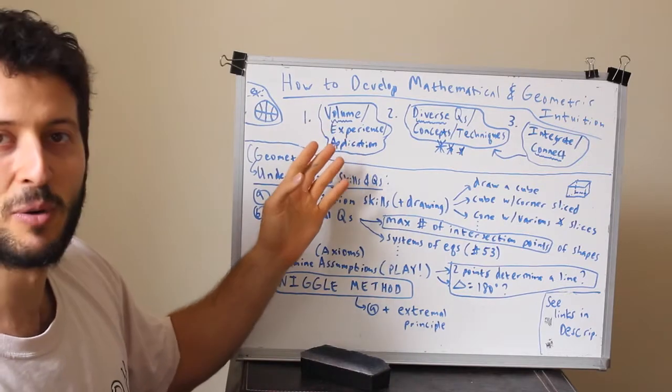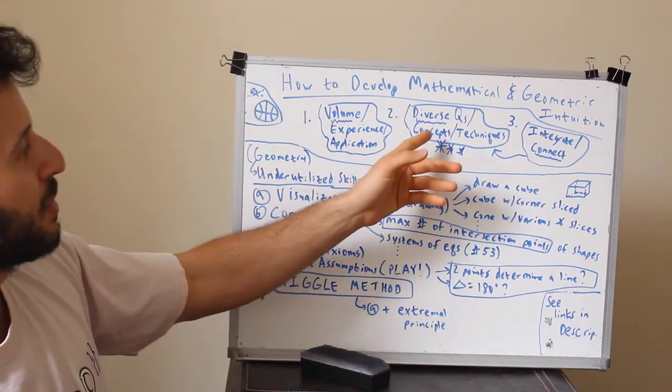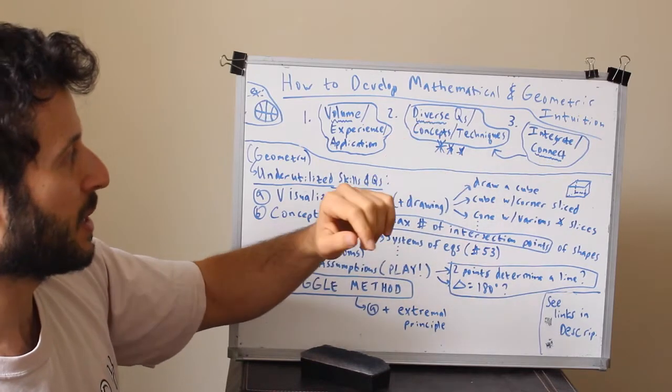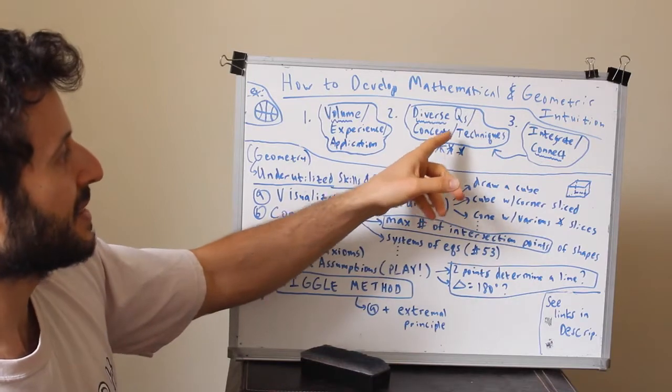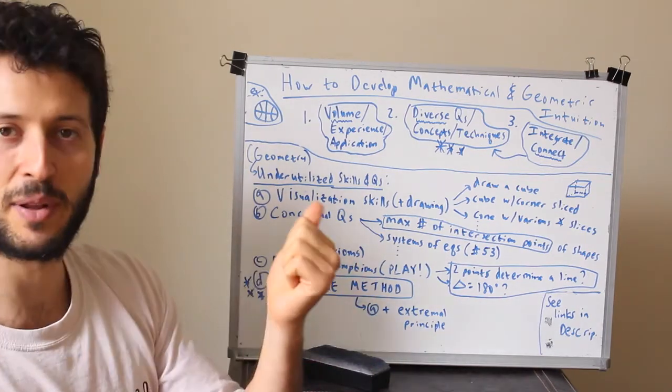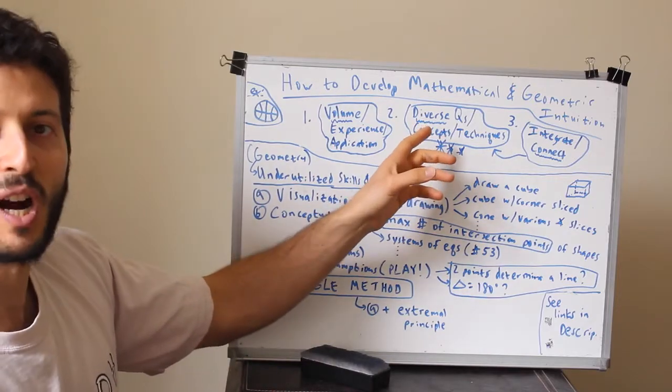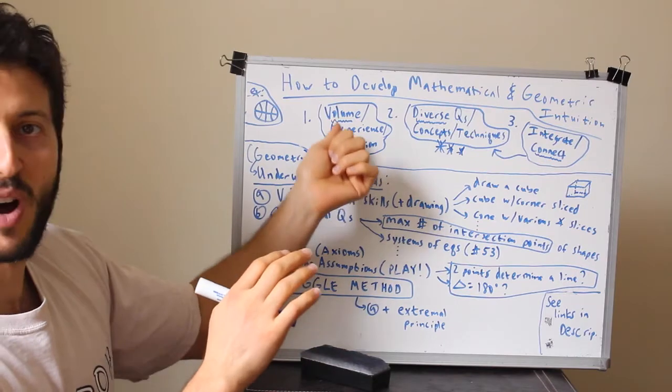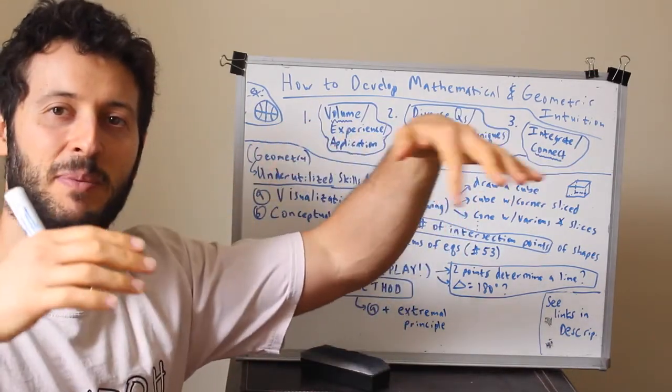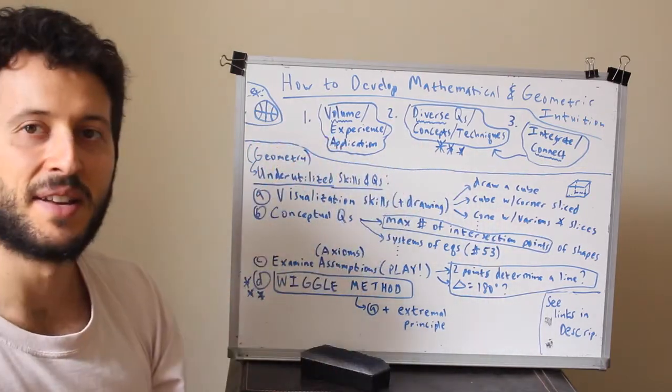Number two is make sure you're doing a diverse amount of questions - diverse question types, concepts, and techniques. For example, there are techniques like the Pythagorean theorem, similar triangles, using angles and all this kind of stuff. If you're only comfortable with one technique or one type of problem, all the volume you want won't help build your intuition. We really want to hit five, ten, many different types of techniques and within that, drill down and do a lot of examples within each of those.